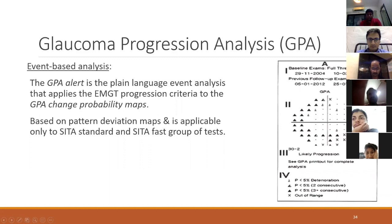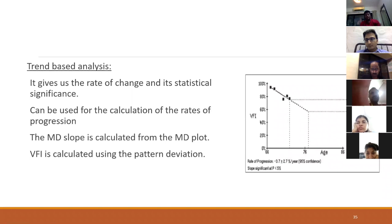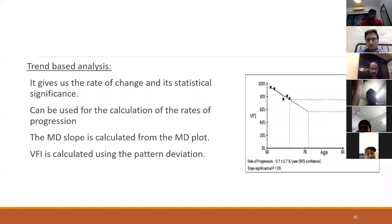The glaucoma change probability map marks significant progression with triangles: an empty triangle for first detection, a half-filled triangle over two successive fields, and a completely filled triangle over three successive fields. Trend-based analysis gives the rate of change of mean deviation or visual field index over five to fifteen fields. Its advantage is that it is less dependent on outliers — if one field is unreliable, the trend analysis can overlook it. The mean deviation slope provides the Mendy plot; a rate of minus 3.7 is quite significant, whereas normally it should be below 0.08.